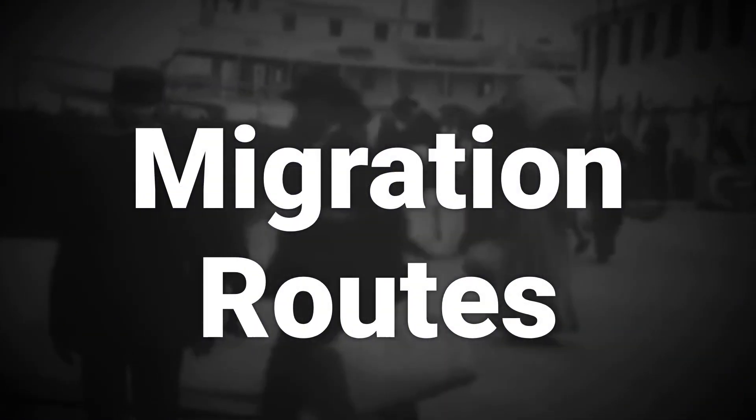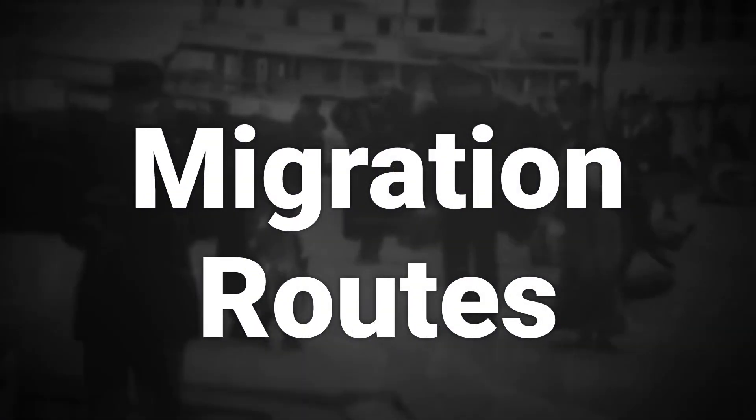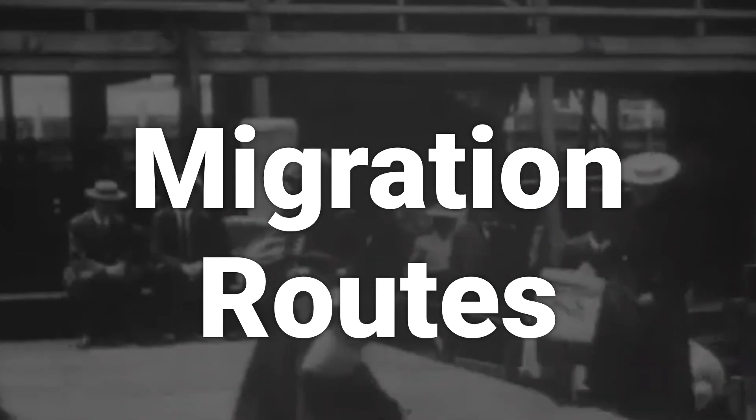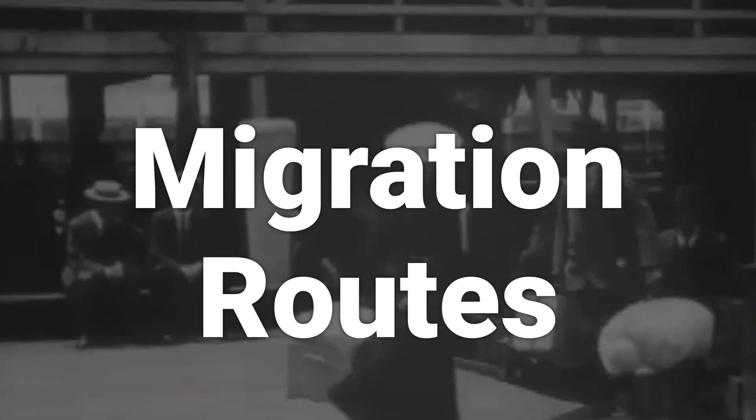The Burley family migrated to various parts of the world, including Canada, the United States, Australia, and New Zealand. In the United States, some of the first settlers arrived in Virginia in the 17th century, and later in Maryland and Colorado in the 18th and 19th centuries.